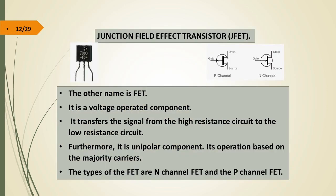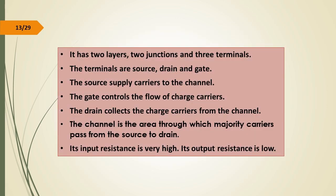Junction Field Effect Transistor (JFET). It is a voltage operated component. It transfers the signal from the higher resistance circuit to the lower resistance circuit. Furthermore, it is a unipolar component, operated based on the majority carriers. The types of JFET are N-channel JFET and P-channel JFET. It has two layers, two junctions, and three terminals.